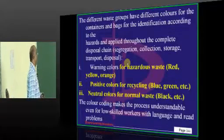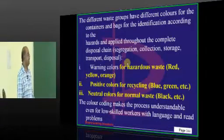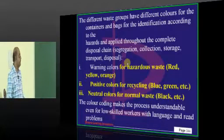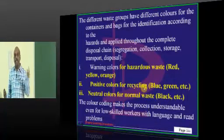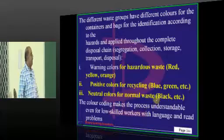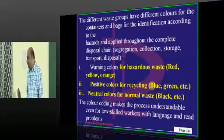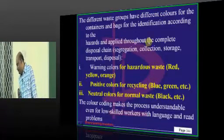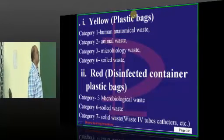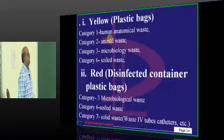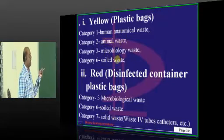Blue and green are called positive colors used when you recycle and reuse material. We use neutral colors — black — for normal waste. Yellow color plastic bags are used for anatomical waste, animal waste, microbiological waste, and soiled waste.